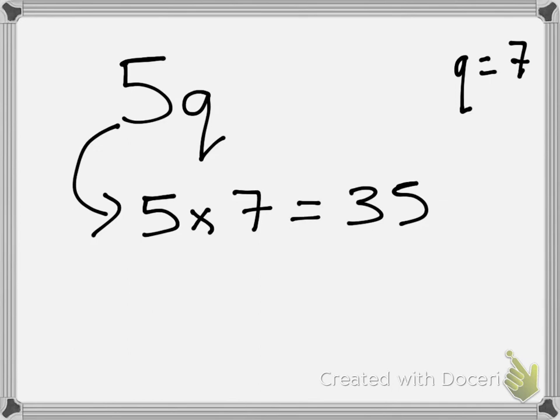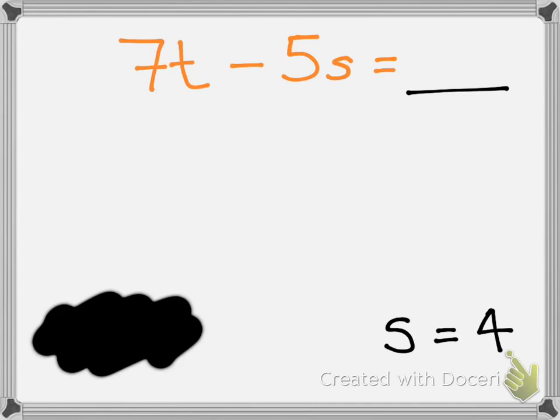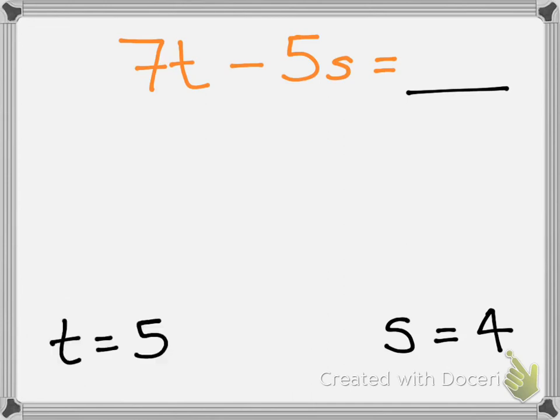Okay, a good way to see if you have understood this rule is by trying this question. So this question is 7t take away 5s. Now, if I tell you that s equals 4 and t equals 5, see if you can work out what the answer to this equation is. A good idea would be to pause the video now and then have a look after at the answer.